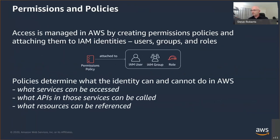Users can also assume roles, and inside application code we can also request temporary credentials using a service called Security Token Service. The credentials are temporary, and when they expire or are about to, the AWS SDKs will automatically handle the refresh — you just keep making your calls, the SDKs do the heavy lifting. A policy controls what services can be accessed, what APIs on those services can be accessed or denied, what resources can be accessed, and under what conditions. By default, nothing is permitted — you add access, and you can also deny it.